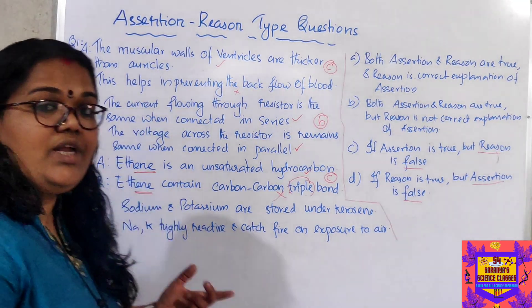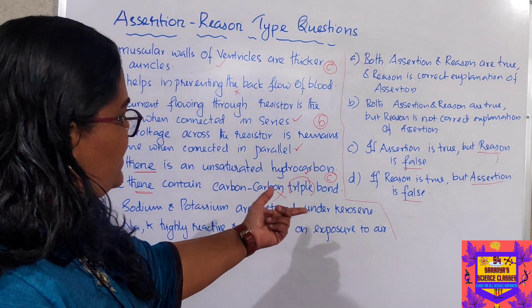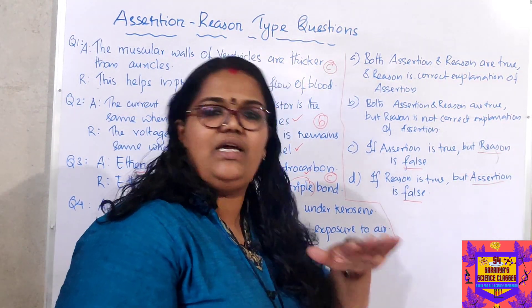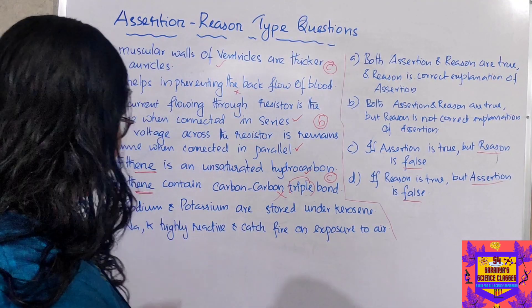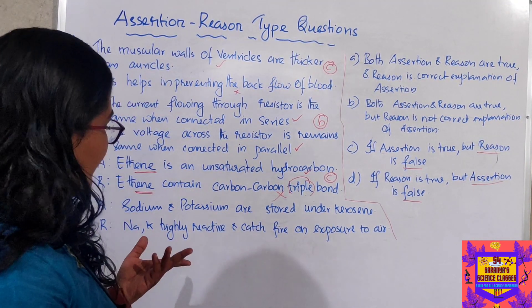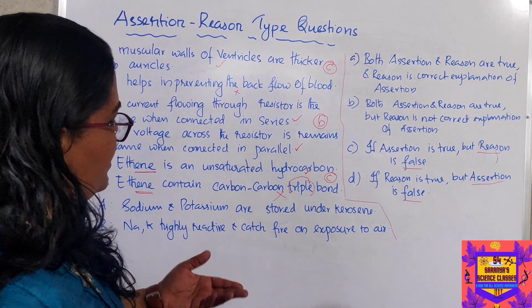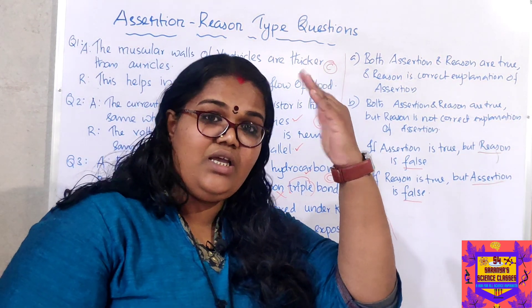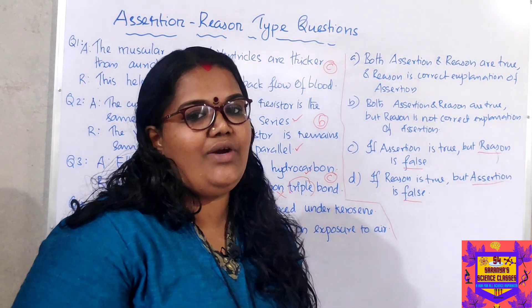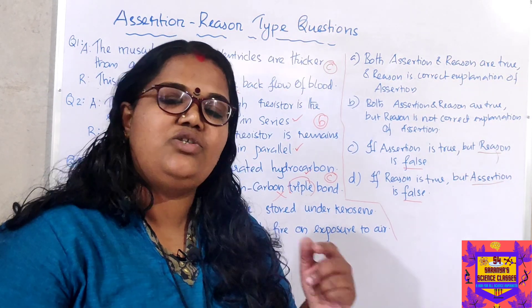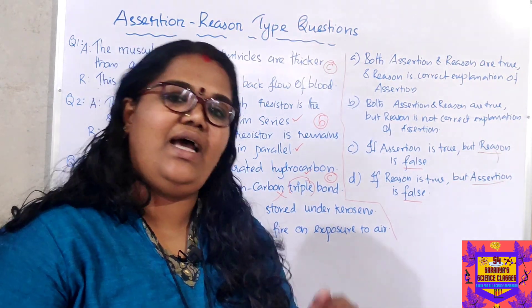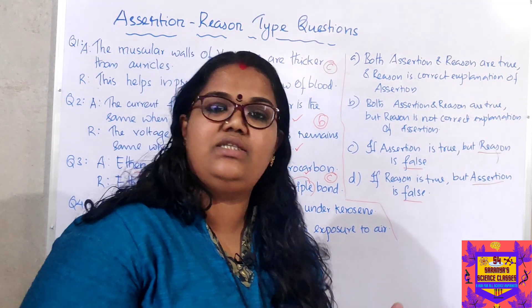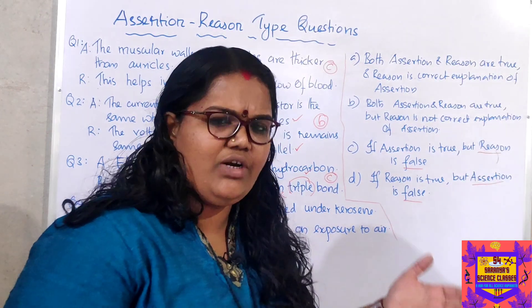Example four — another chemistry question. Assertion: sodium and potassium are stored under kerosene. Yes — sodium and potassium are stored immersed in oil. That is correct. Reason: sodium and potassium are highly reactive and catch fire on exposure to air. Sodium and potassium appear first in the reactivity series — I have already given a trick video to learn the reactivity series, please go through and watch it. Because they are highly reactive, when exposed to air, they react with oxygen and catch fire. That is also correct.